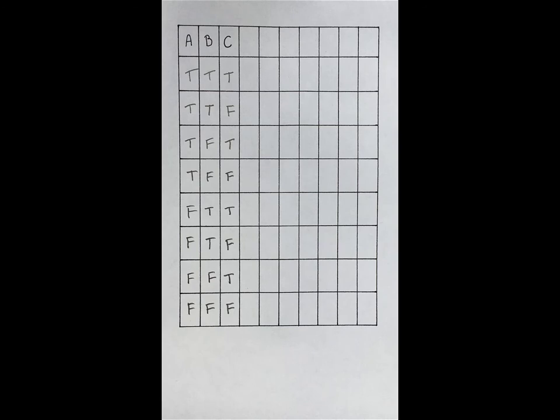Now we'll write in our target sentence. To keep things neat, we'll divide the target sentence up so we have columns for each of the basic sentence letters and connectives, like this.